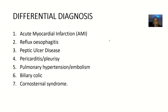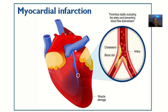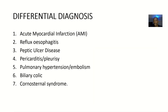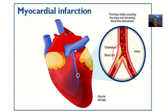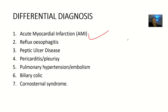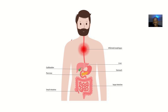The first differential is myocardial infarction. Myocardial infarction is basically the obstruction of any artery of the heart, mostly the coronary artery. Then we have reflux or esophagitis, which is inflammation of the oesophagus, where abdominal contents are refluxing back.